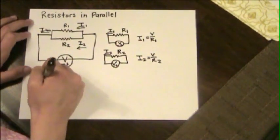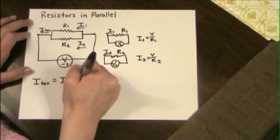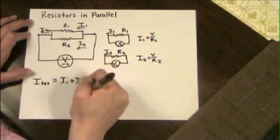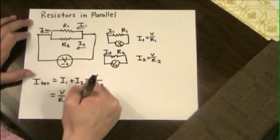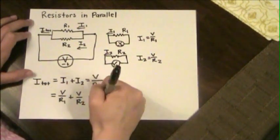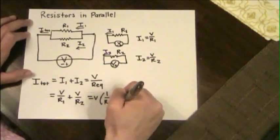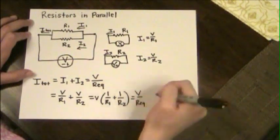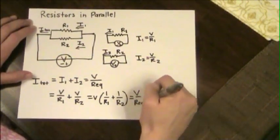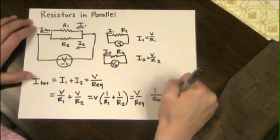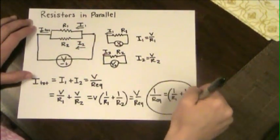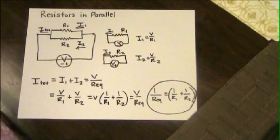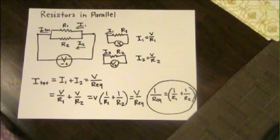I_total equals I1 plus I2, and we can write I_total as the voltage V divided by some equivalent resistor R_EQ. So if we write it out, we can easily derive the formula for equivalent resistance by substituting the expressions for I1 and I2. We see that 1 over R_EQ equals 1 over R1 plus 1 over R2.